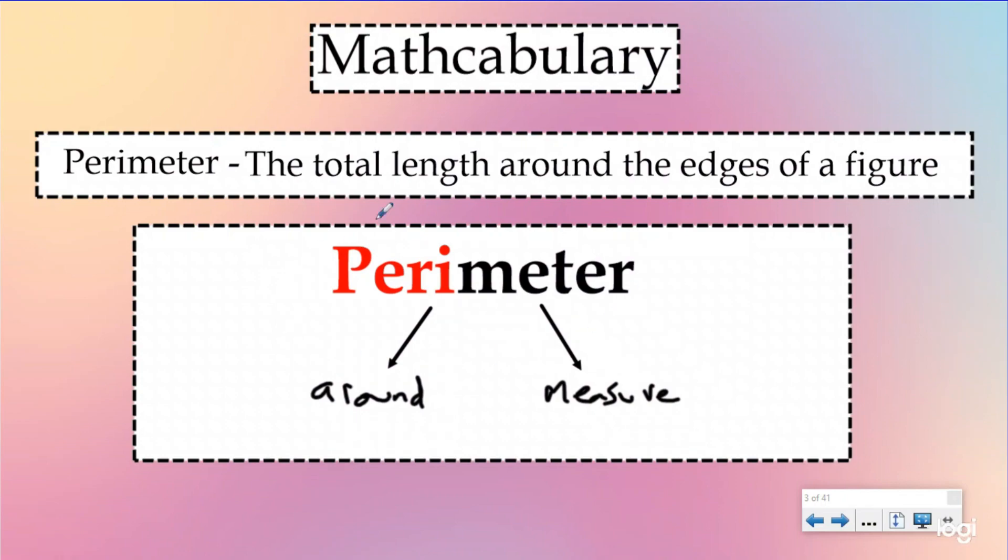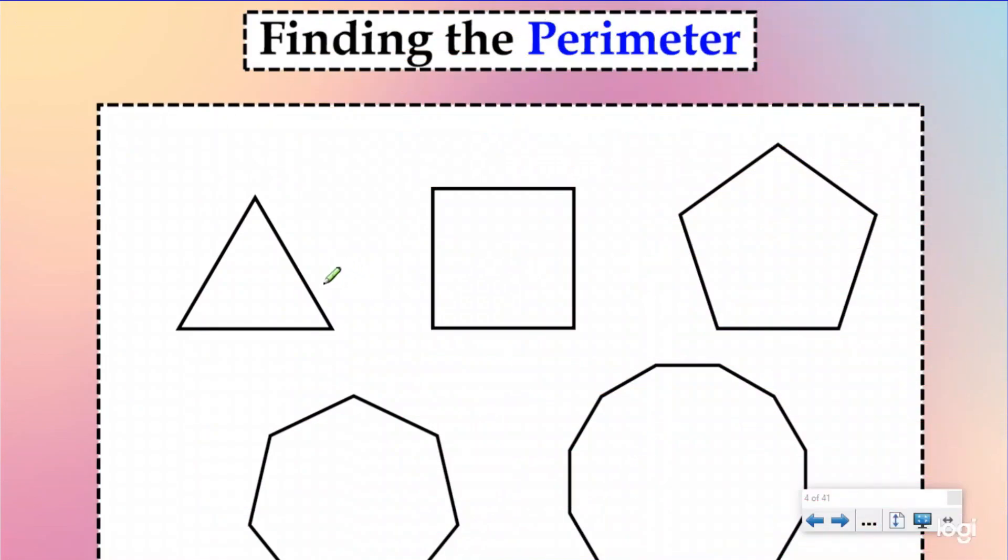So you can use that to help you remember the difference between area and perimeter. So just like we talked about before, when we're looking for the perimeter, we're going around the edges of a shape. So edges are kind of the sides of a two dimensional shape and you can find the perimeter of any closed figure.